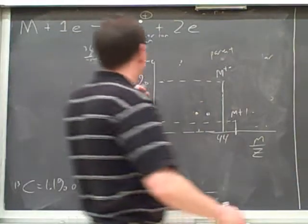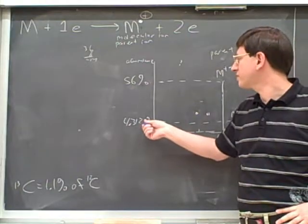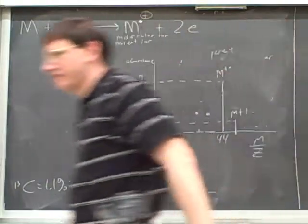If we know that the parent peak has an abundance of 56, and the m plus 1 has an abundance of 4.3, what clue does that tell us?